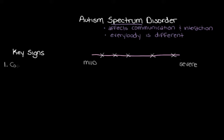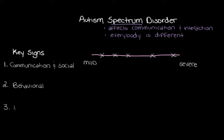First, let's look at communication and social signs as our first category. Next, we'll look at behavioral signs. And our last category will be responses to environmental stimuli — essentially the way someone responds to things that they see or encounter. This will make more sense as we get to it.